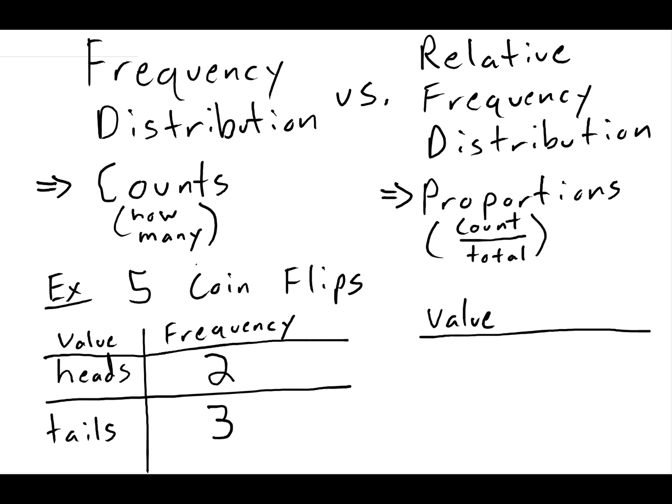So now let's make a relative frequency distribution, which will have the same value column. But instead of having the frequency, we're going to have what's known as the relative frequency, which is going to tell us how many out of the whole. So we had five total flips, so that's the bottom of our fraction here. And for the heads, we had two heads, so the relative frequency is two-fifths. Another way I could write that is forty percent.